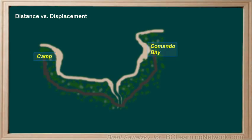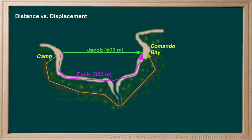Jacob decides to swim directly across to Commando Bay — 500 meters. Emily hikes along the beach to get to the bay, and this route is 800 meters. Austin takes his mountain bike along a 1 kilometer trail through the forest, that is 1,000 meters.